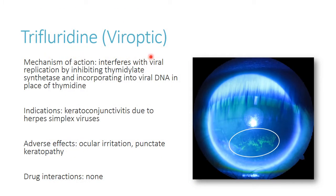Trifluridine works by inhibiting thymidylate synthetase and gets incorporated into viral DNA in place of thymidine — making it a thymidine analog rather than a guanine analog. It's usually used for keratoconjunctivitis, specifically for herpes infections. A unique side effect is a punctate keratopathy that can be seen using fluorescein stain with a Wood's lamp, where the eye glows with black light.